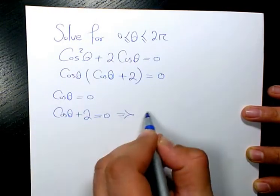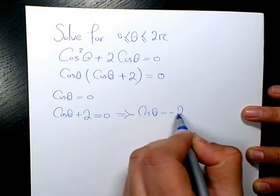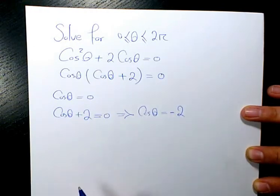So the second one means that cosθ will be equal to -2, which is not possible.